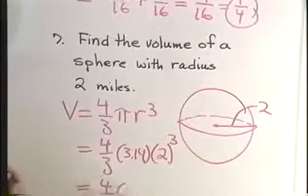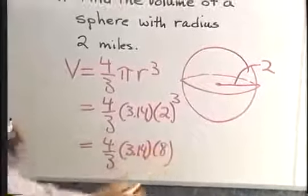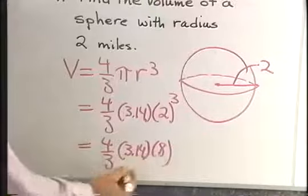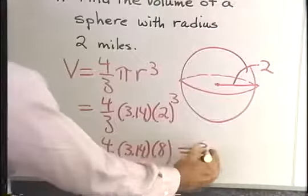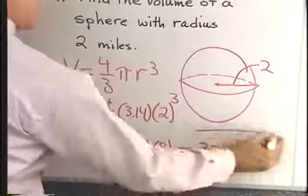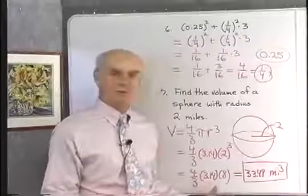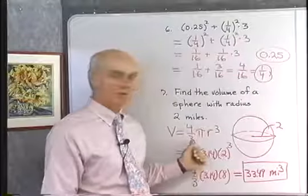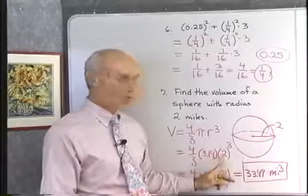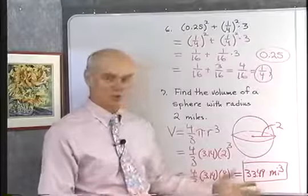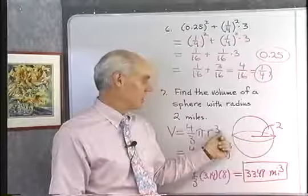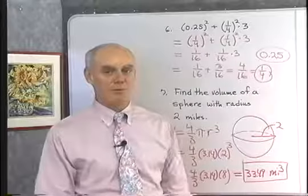So 4 thirds times 3.14 times 8. And if I do this arithmetic right here, multiply 4 times this times 8, divide what I get by 3, I end up with 33.49 cubic miles. So I won't actually do that arithmetic right there. I just wanted to use the formula and get it down to this point right here so that you can see. It's a formula that involves both a fraction and a decimal. So I take this radius 2 for the sphere, plug it into the formula right here, that's 2 cubed, then I get 8. If I do this arithmetic, you'll end up with 33.49. And then the units are cubic miles because this r is to the third power, and the units on r would be miles. So miles to the third power, we get cubic miles.